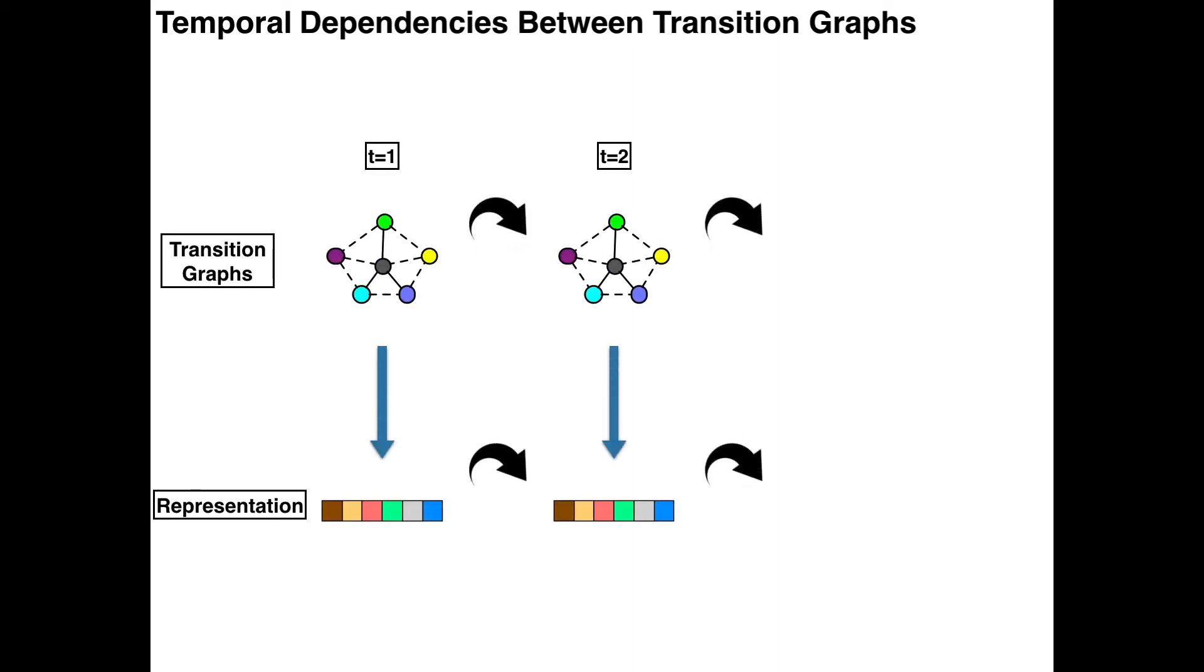For temporal dependency, the embedding of driving state transition graph not only depends on the driving operations at the current time period, but also has correlations with the previous ones.